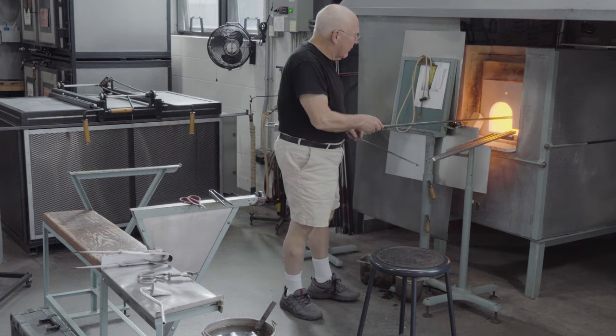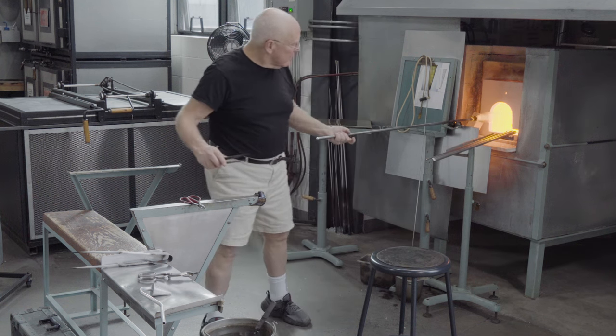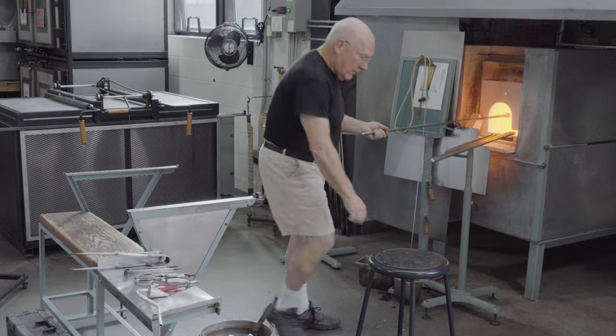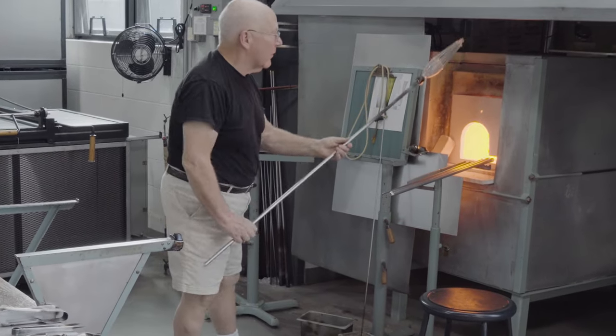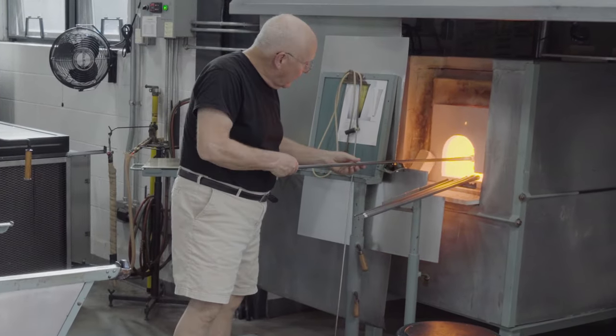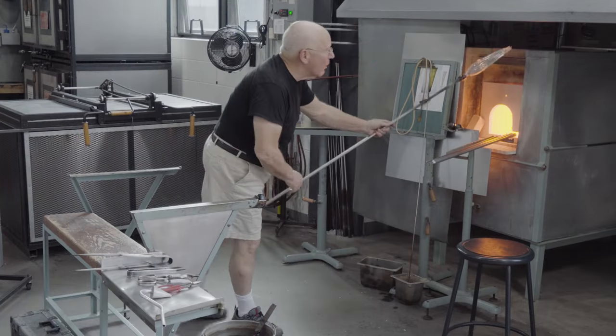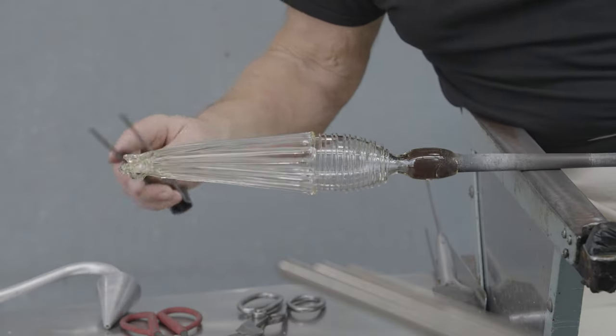After all of the loops are made, the entire vessel is softened slightly. At this point, the loops are not perfectly parallel. They're a little bit helter-skelter. And when the tip of the vessel is pulled longer, they immediately straighten out. It vastly improves the appearance of the vessel.